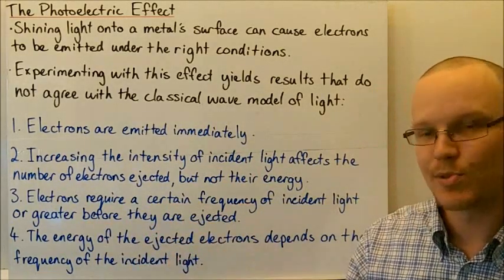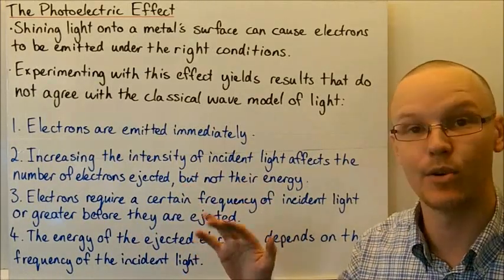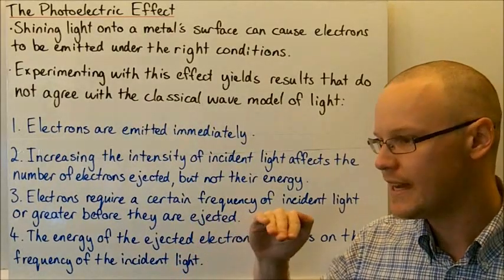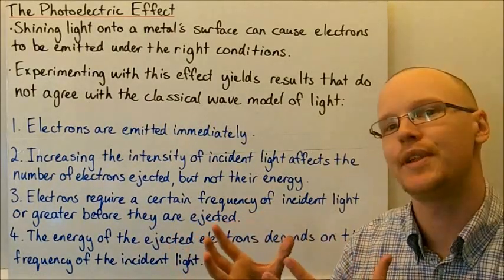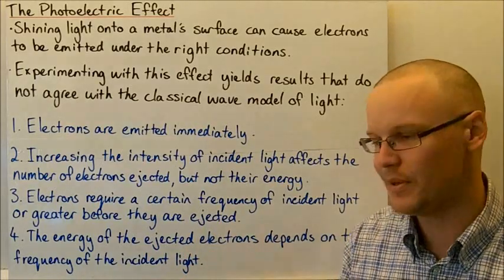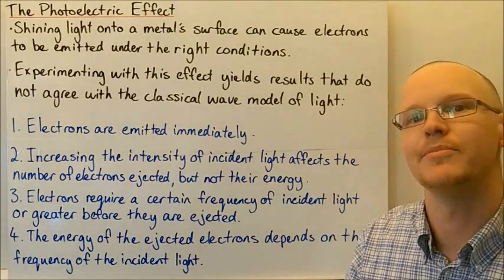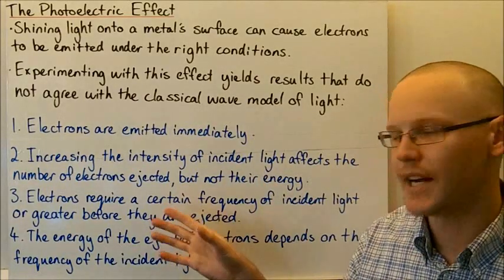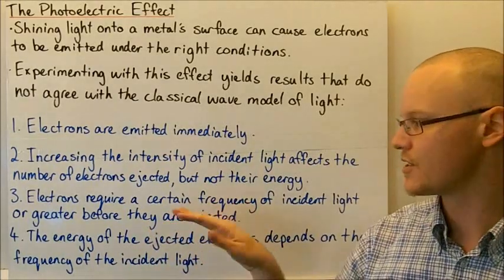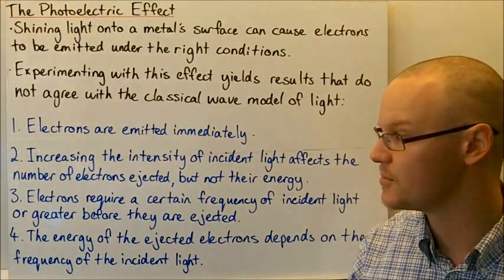Number three: the electrons required a certain frequency of incident light — or greater — before they were ejected. The wave theory of light says the energy should build up in the metal so that after a certain time the electron should be ejected. That wasn't the case — the metal required a certain frequency or greater before those electrons started to be ejected.